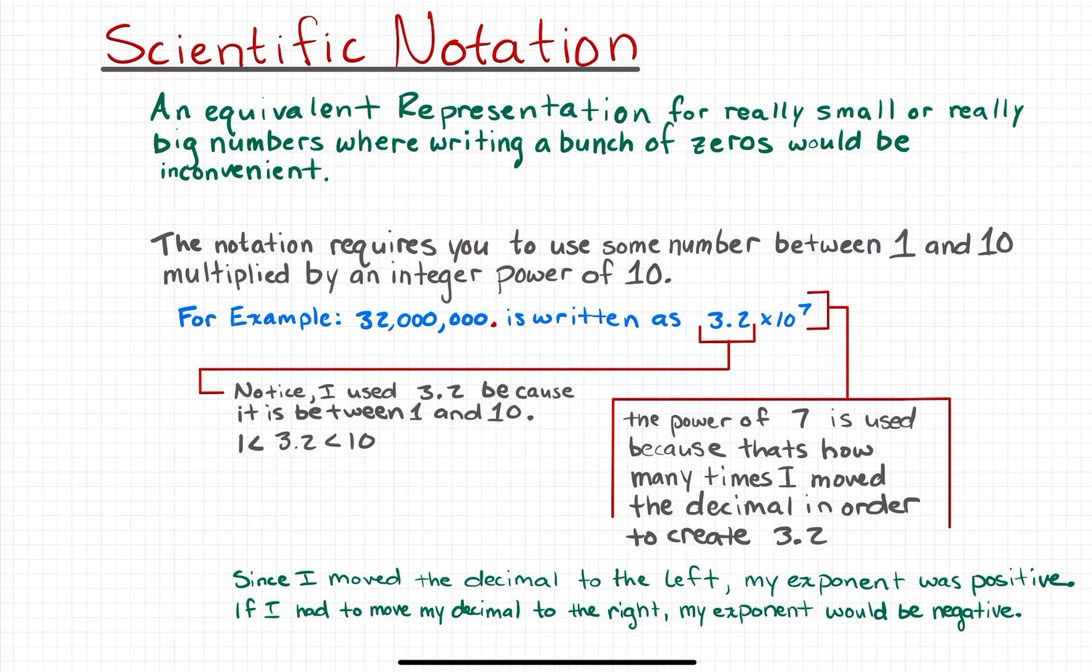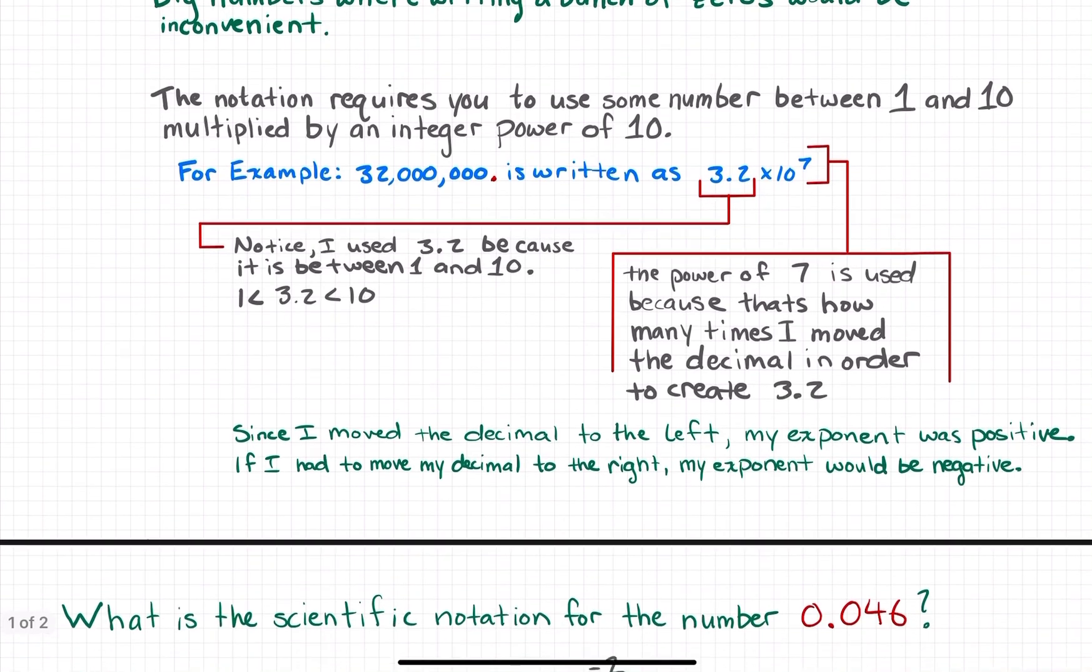It's important to note that since I moved the decimal to the left, my exponent was positive. But if it was a really small number and I had to move my decimal to the right in order to make a number between 1 and 10, then my exponent would be negative.